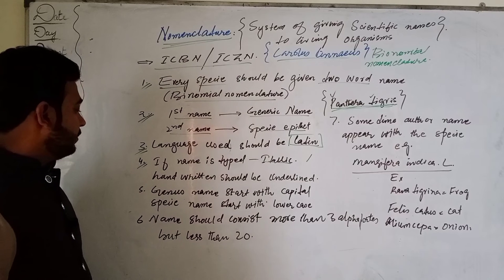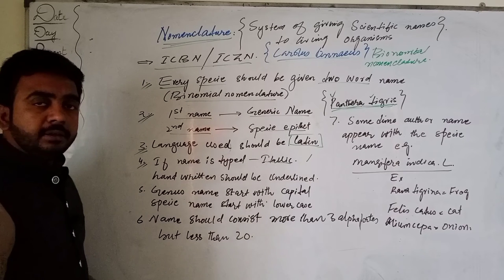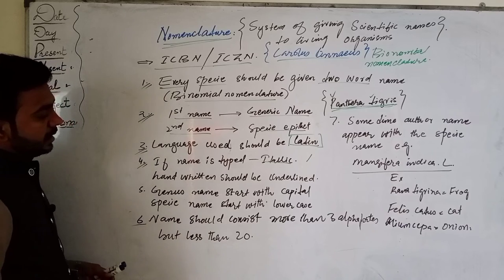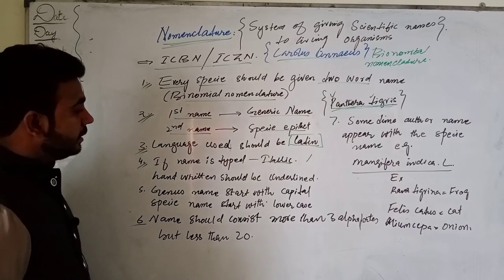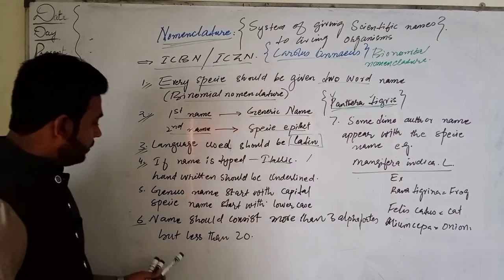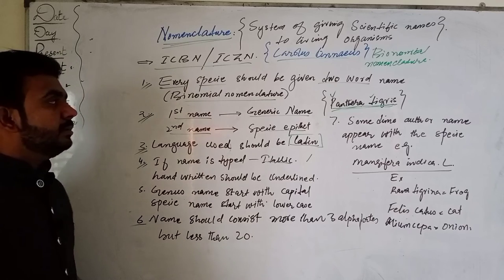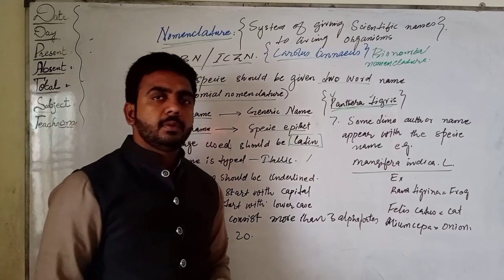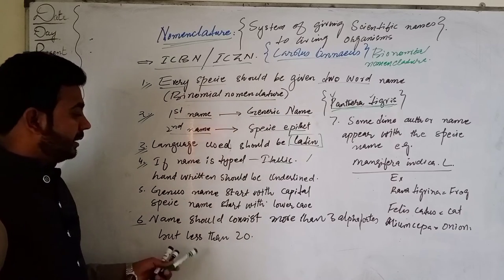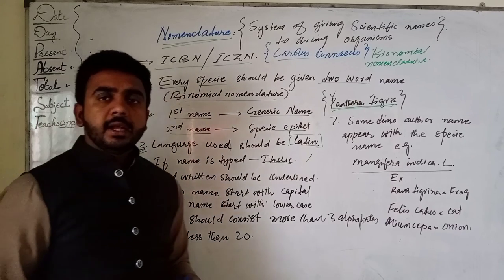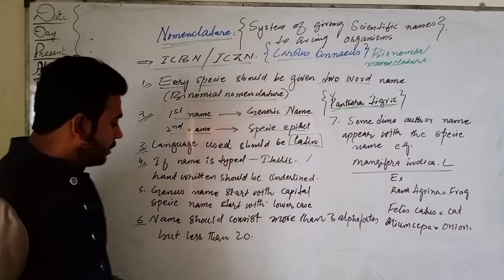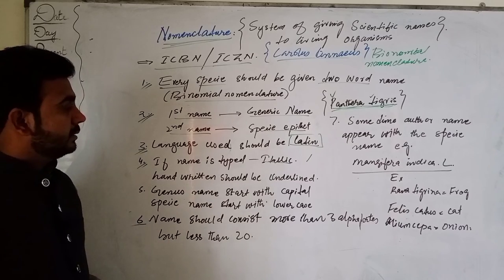The sixth rule states that the name should consist of more than three alphabets but less than twenty. This means the scientific name should not be too short or too long.